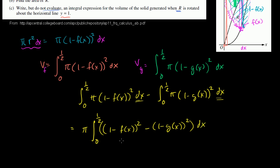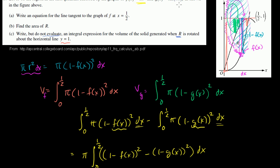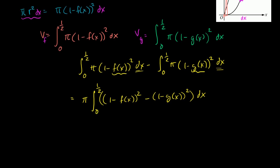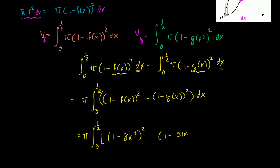You would probably want to do this for the AP exam — not leave it in terms of f(x) and g(x), but write the actual expressions. So the best answer would be π times the integral from 0 to 1/2 of [(1 − 8x³)² − (1 − sin(πx))²] dx. And that would be our answer. You can see why they didn't want us to evaluate it — they just wanted us to set up this integral.